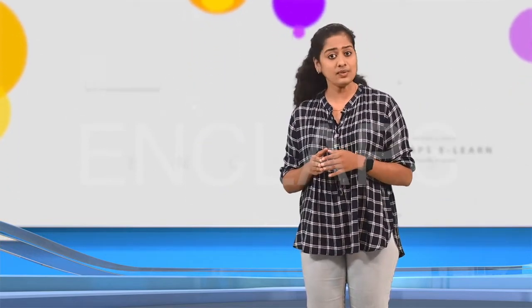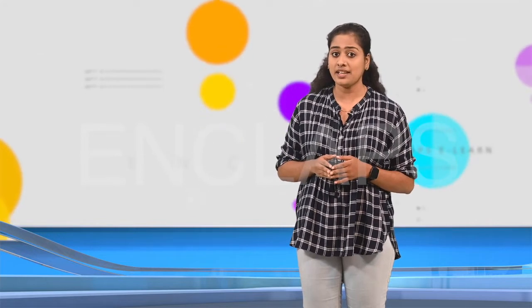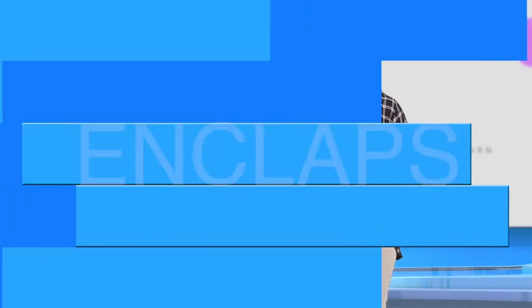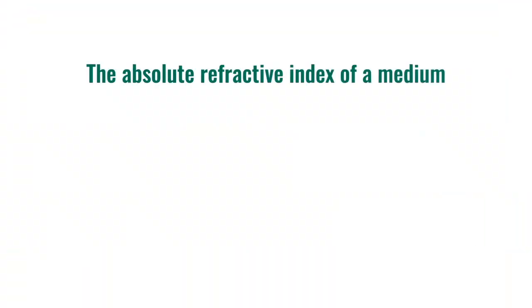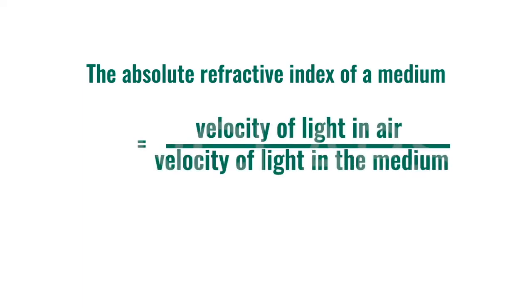Here, we can take an approximation. The velocity of light in air and vacuum are almost equal, so the velocity of light in vacuum is considered as the velocity of light in air for calculations. So, the absolute refractive index of a medium is equal to the velocity of light in air divided by the velocity of light in the medium — that is, C divided by V.